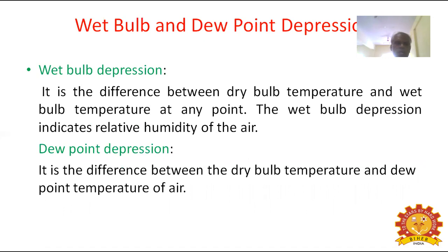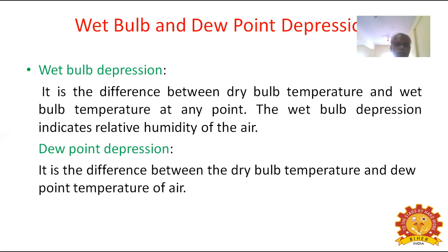Next we are going to discuss wet bulb and dew point depression. Wet bulb depression is the difference between dry bulb temperature and wet bulb temperature at any point. The wet bulb depression indicates the relative humidity of the air.